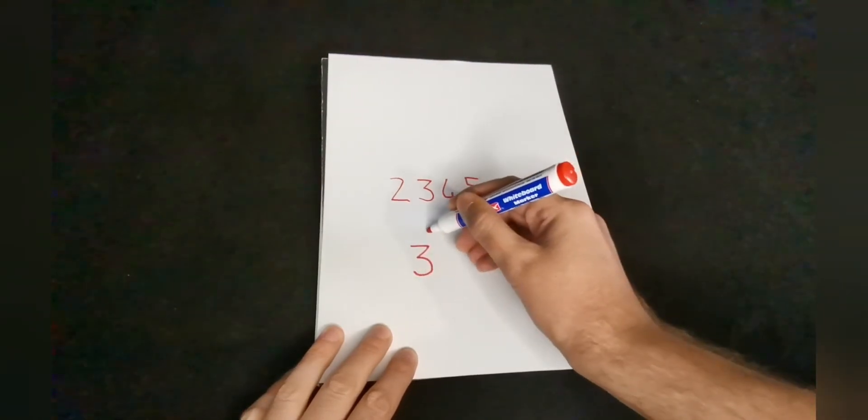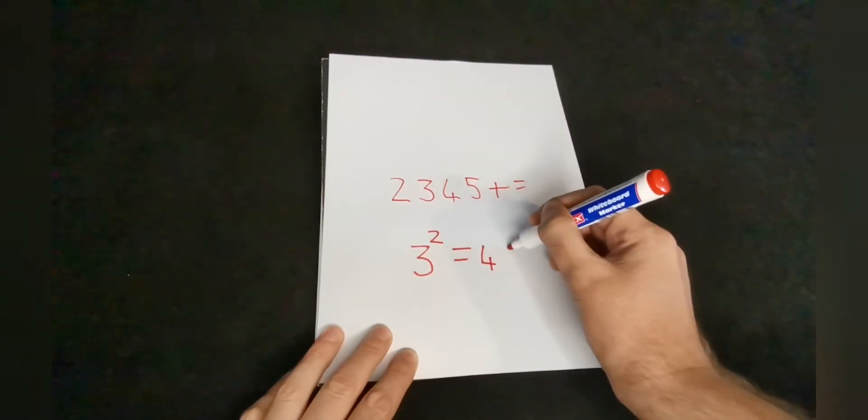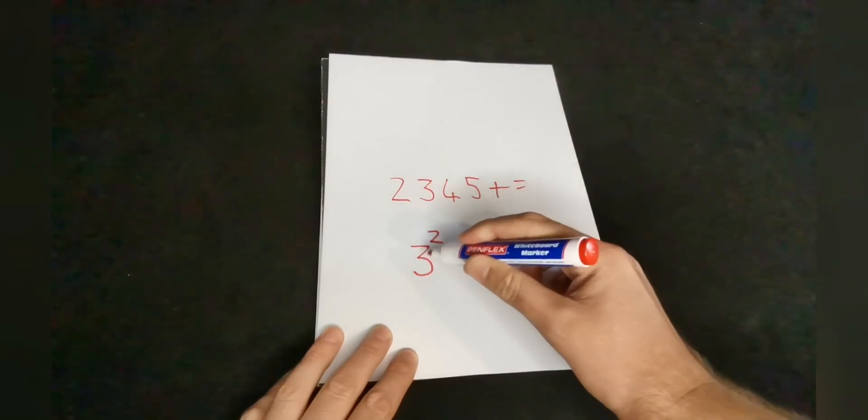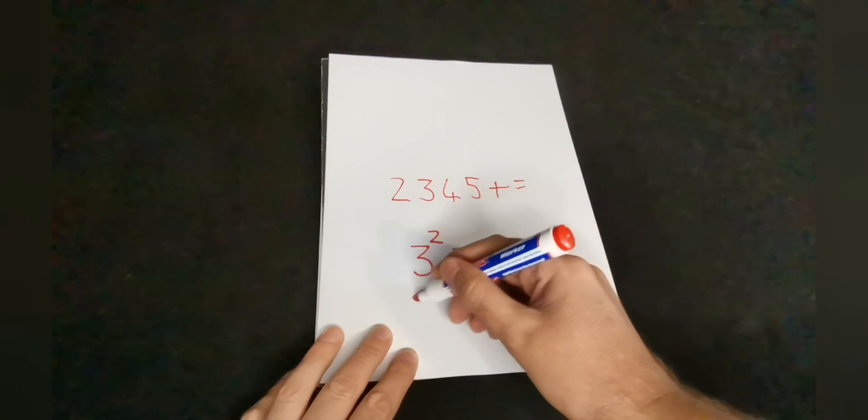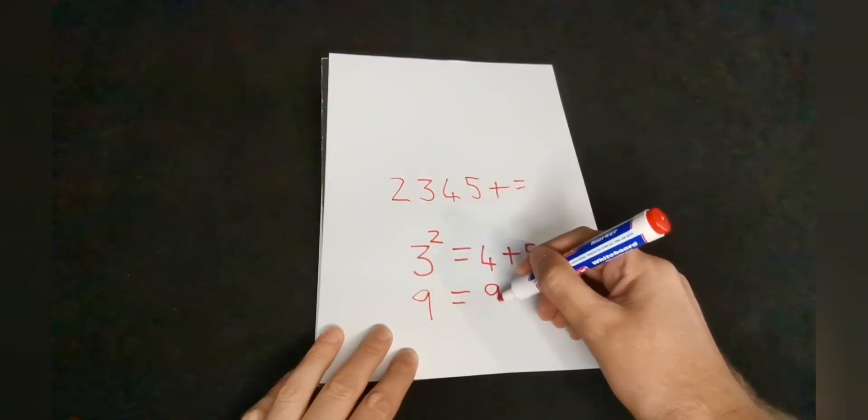And you can show them, simply just remember I said you are allowed to manipulate the numbers. Three squared equals four plus five, which is true because three squared is nine and four plus five is nine.